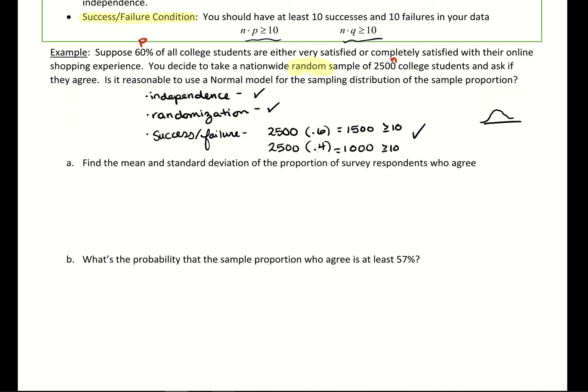So find the mean and standard deviation. So the mean for our proportions and standard deviation for our proportions. Mean for the proportions, you're just copying. So we just need to find our population proportion, which was that 0.6.